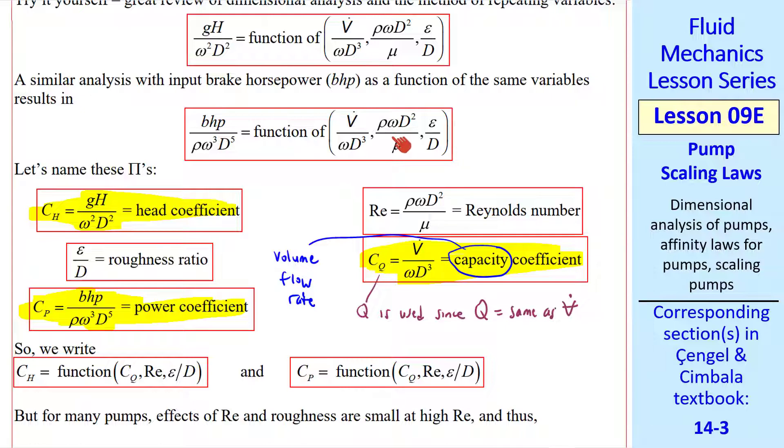This second independent parameter, pi, is a form of Reynolds number. Omega times D is a speed, since omega has dimensions of 1 over time and D has dimensions of length. So it might help to write Reynolds number this way. Reynolds number is density times speed times diameter over mu. And finally, epsilon over D is the roughness ratio, similar to what we did with pipe flow, but this epsilon is now the roughness length inside the pump wall. Using these definitions, we rewrite CH as a function of Cq, Reynolds number, and epsilon over D, and similarly for Cp.